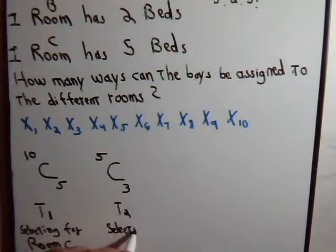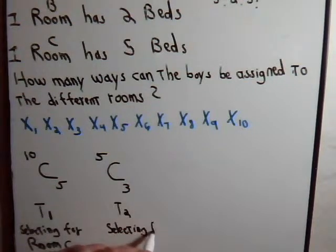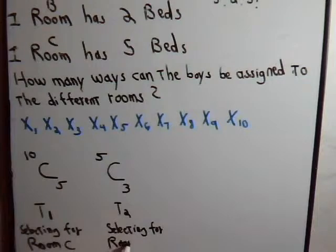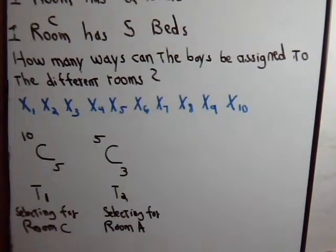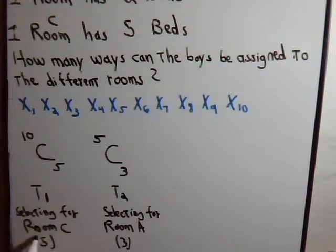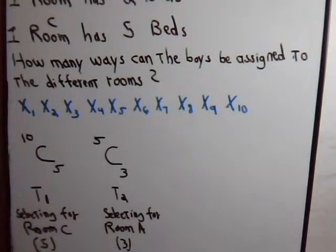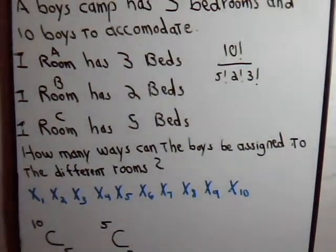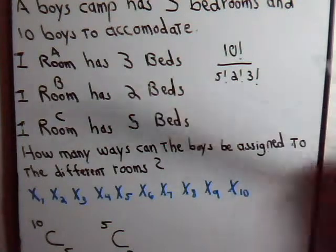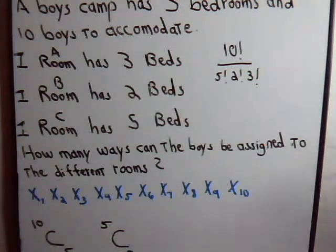Selecting for room A. Room A has three beds. Room C has five beds. So now we have selected eight boys total. Then there are two boys left to go to room B.